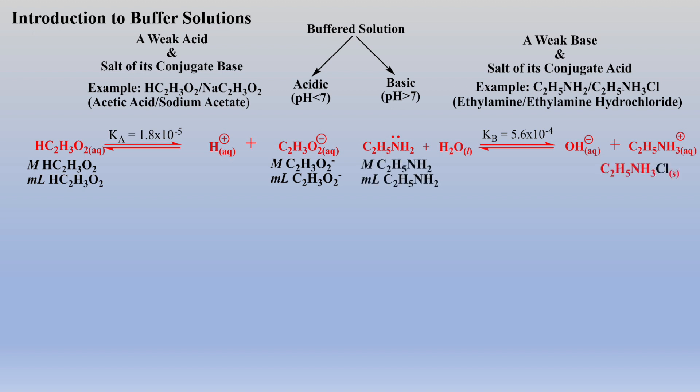In this example, the conjugate acid is delivered via ethylamine hydrochloride, which is an ionic compound or salt.